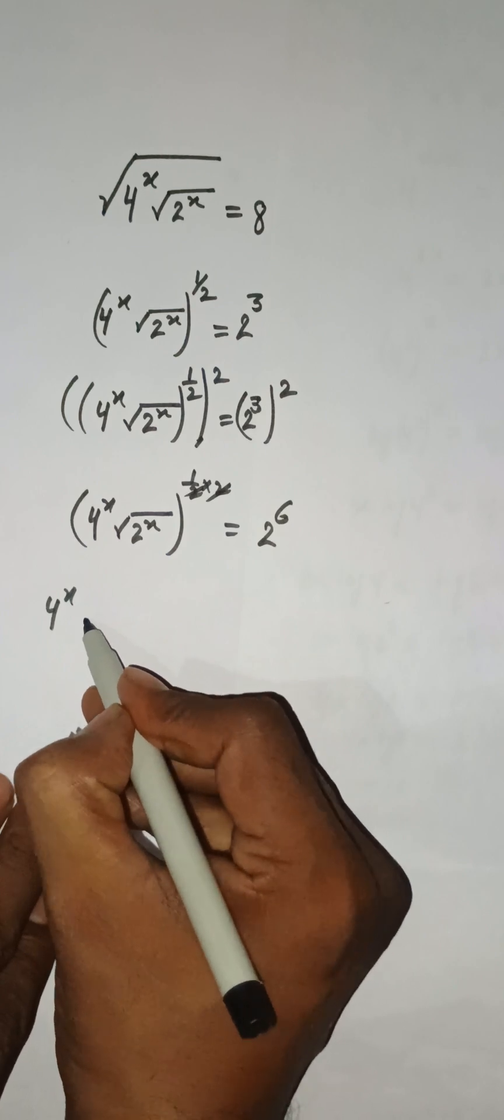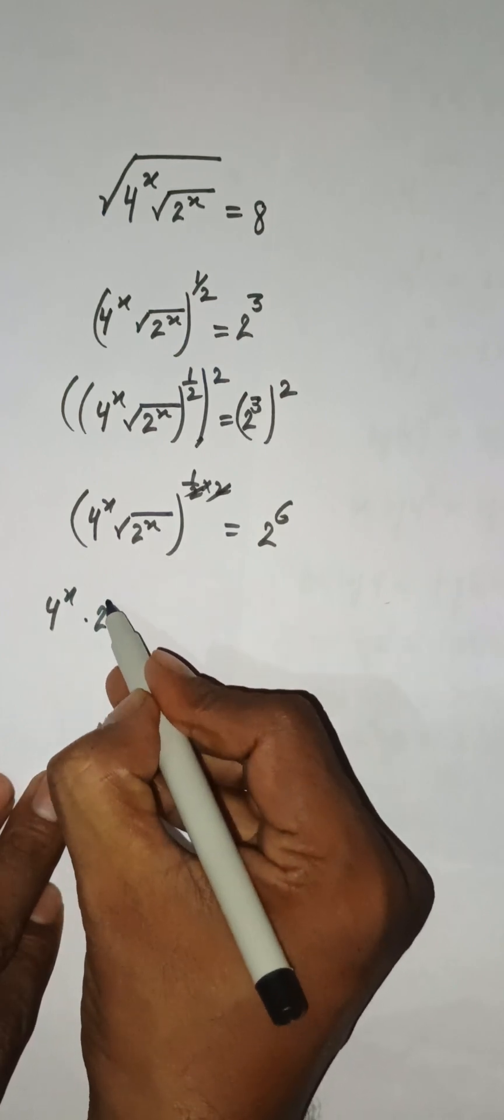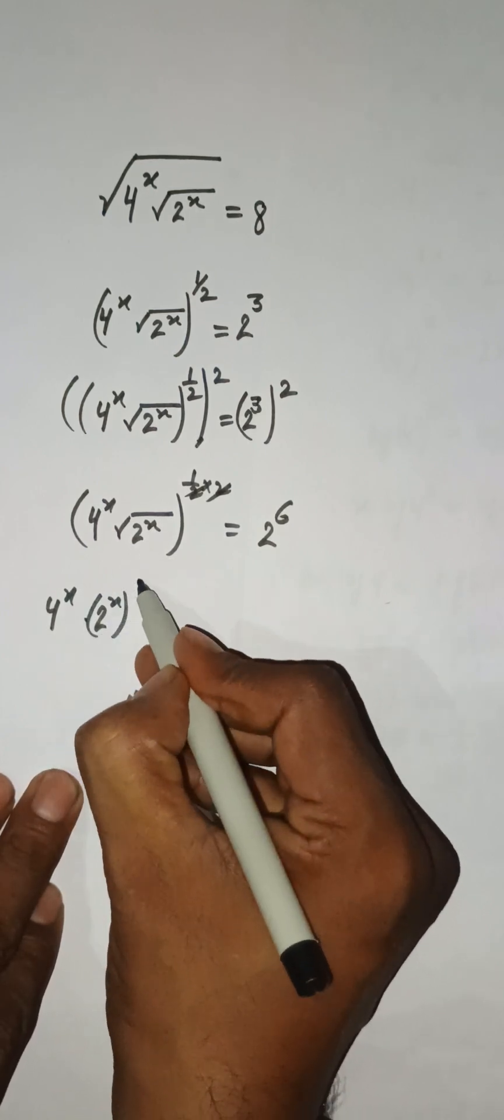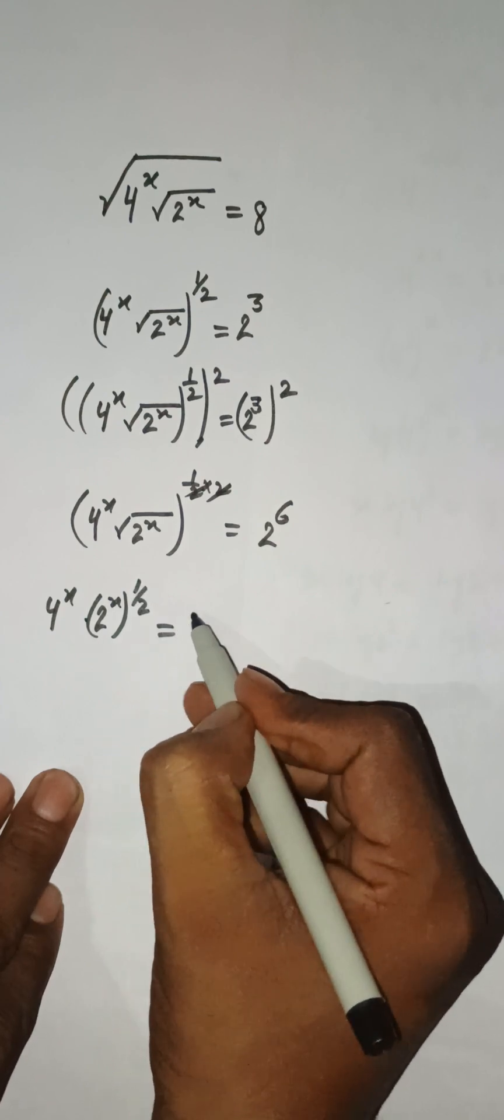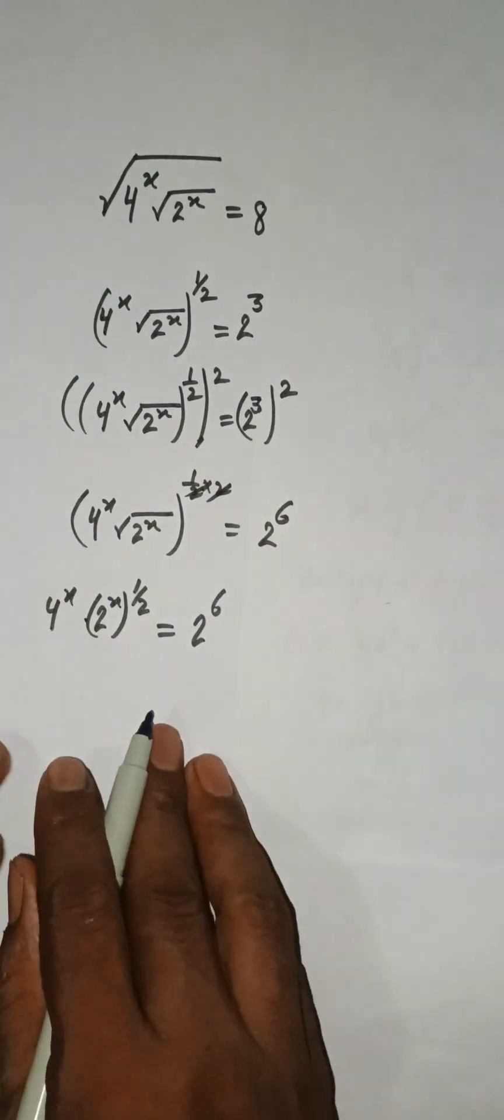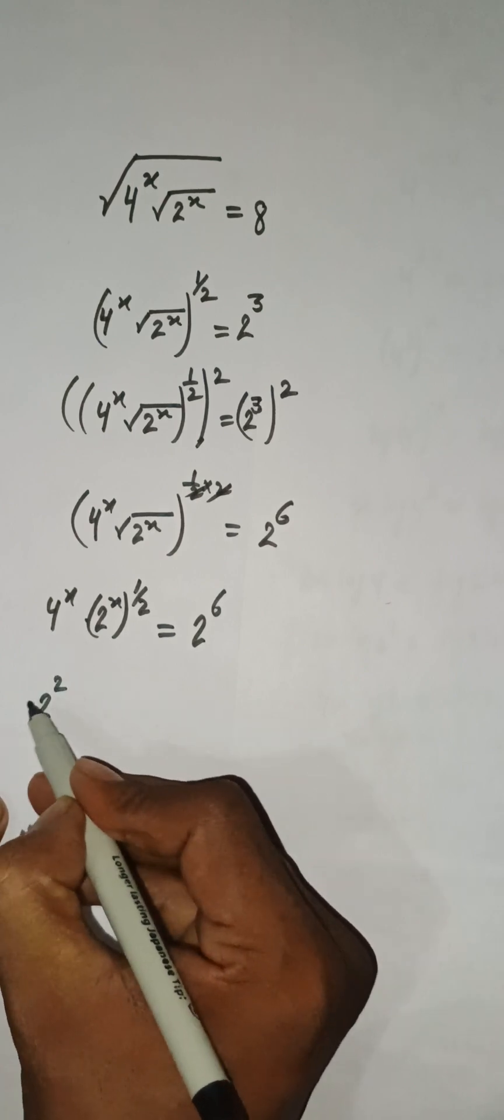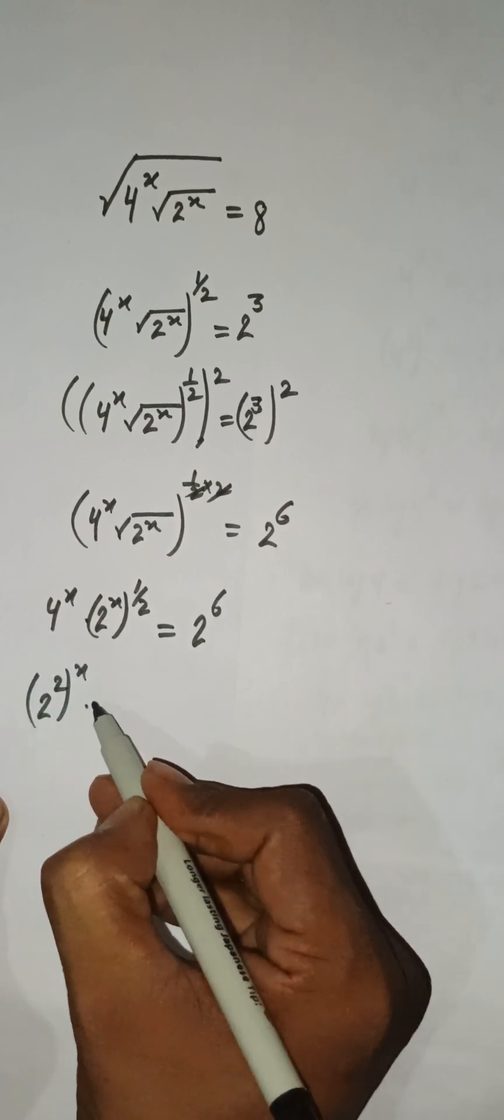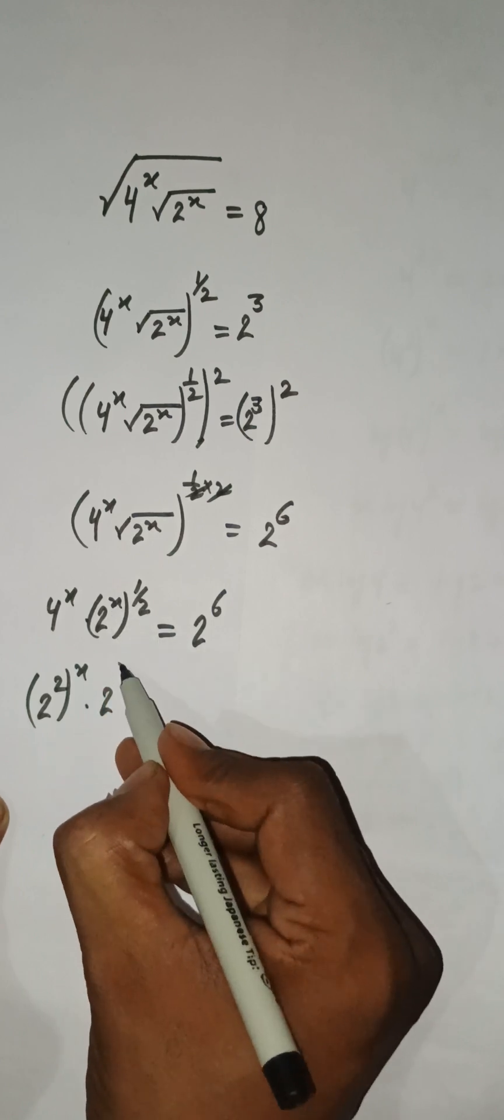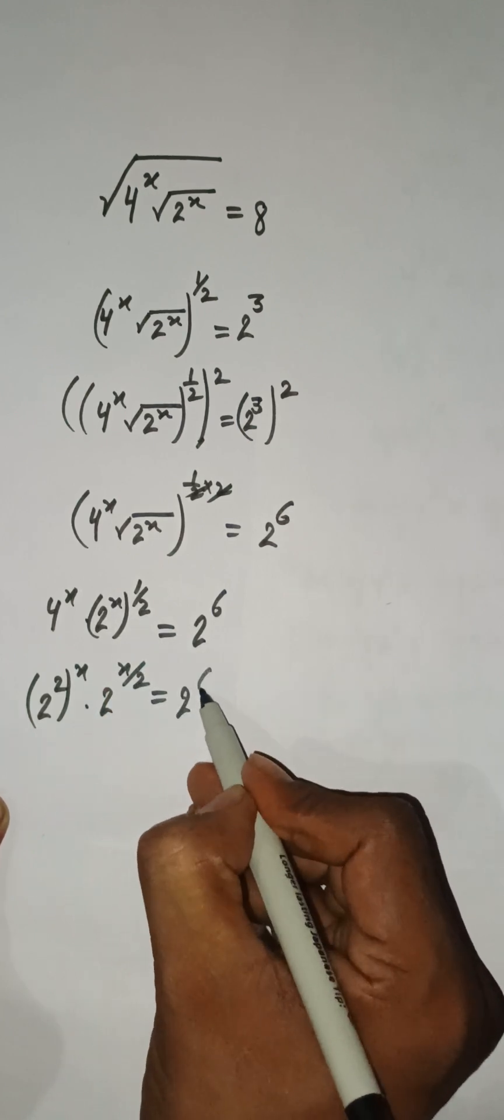So we have 4 to the power x and we can say that 2 to the power x times 1 upon 2, that is equal to 2 to the power 6. Now this 4 can be written as 2 to the power 2.